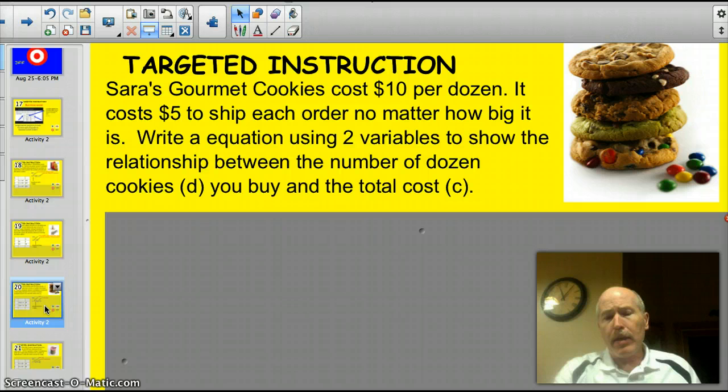All right, here's another type. It's a little more complicated. We'll start off with it. It's about Sarah's Gourmet Cookies. This is a shout-out to my neighbor Sarah, who makes the best chocolate chip cookies ever. All right, Sarah's Gourmet Cookies cost $10 per dozen. It costs $5 to ship each order, no matter how big it is. Write an equation using two variables to show the relationship between the number of dozen cookies you buy, D, and the total cost, C. All right, so the three most important things, numbers. We've got $10 and we've got $5. And then the variables, D and C.